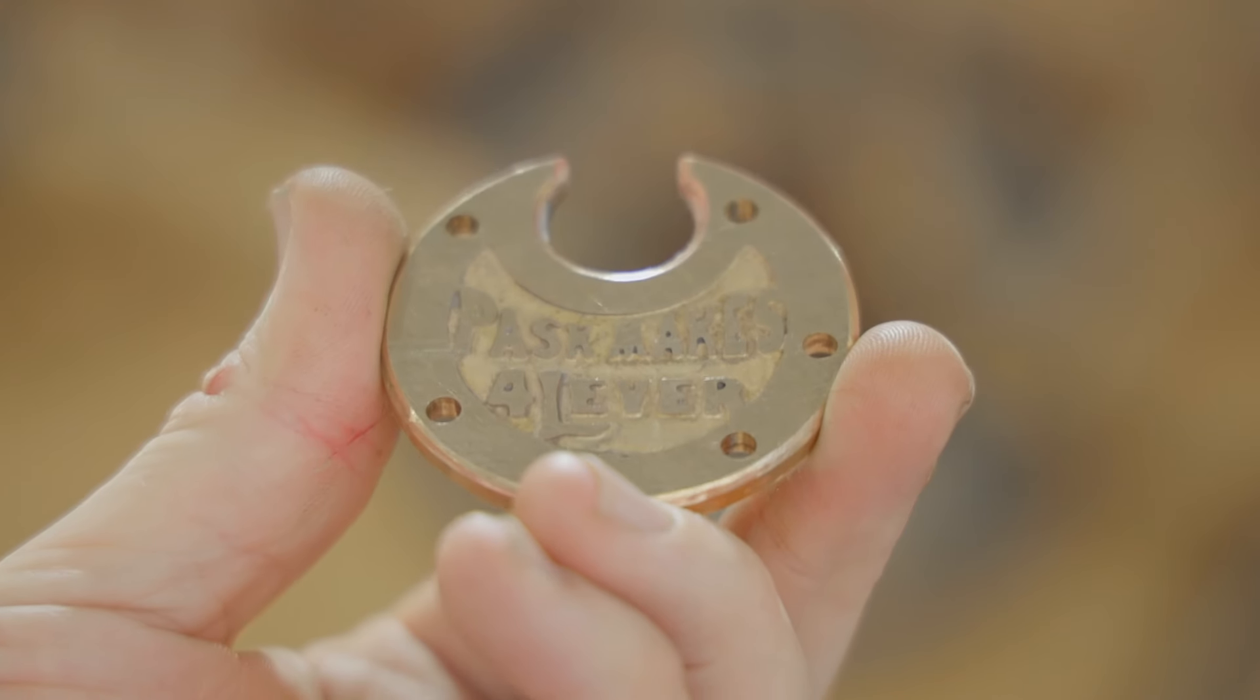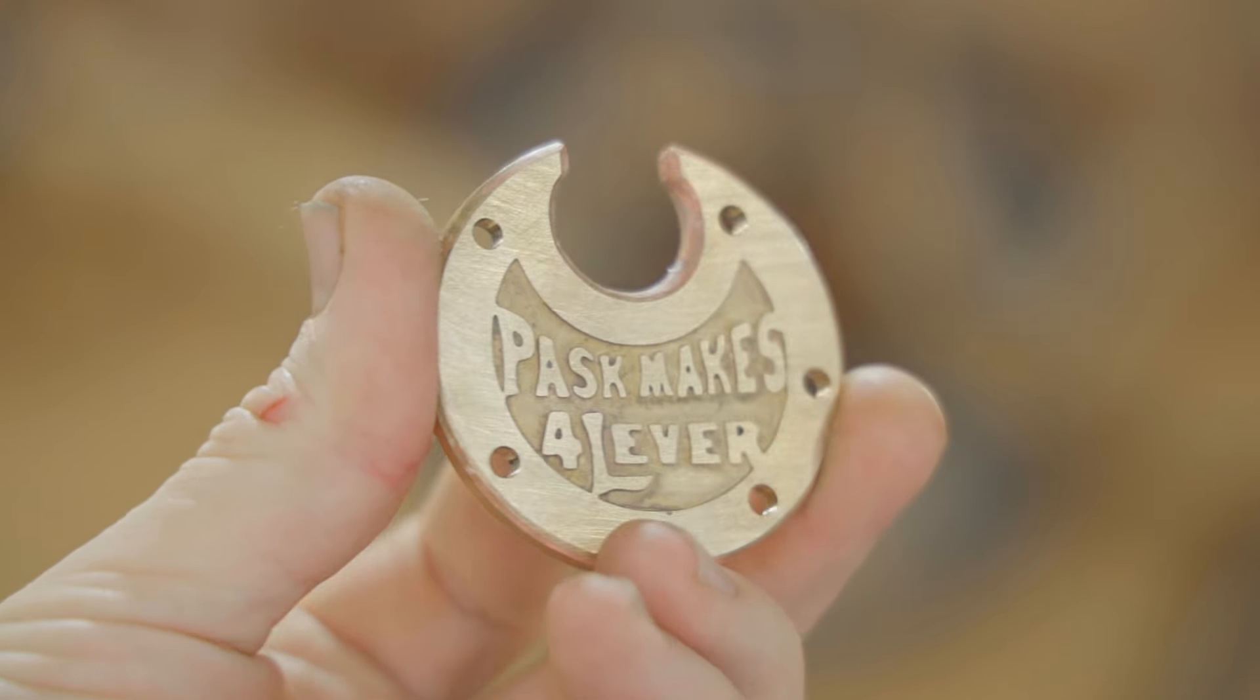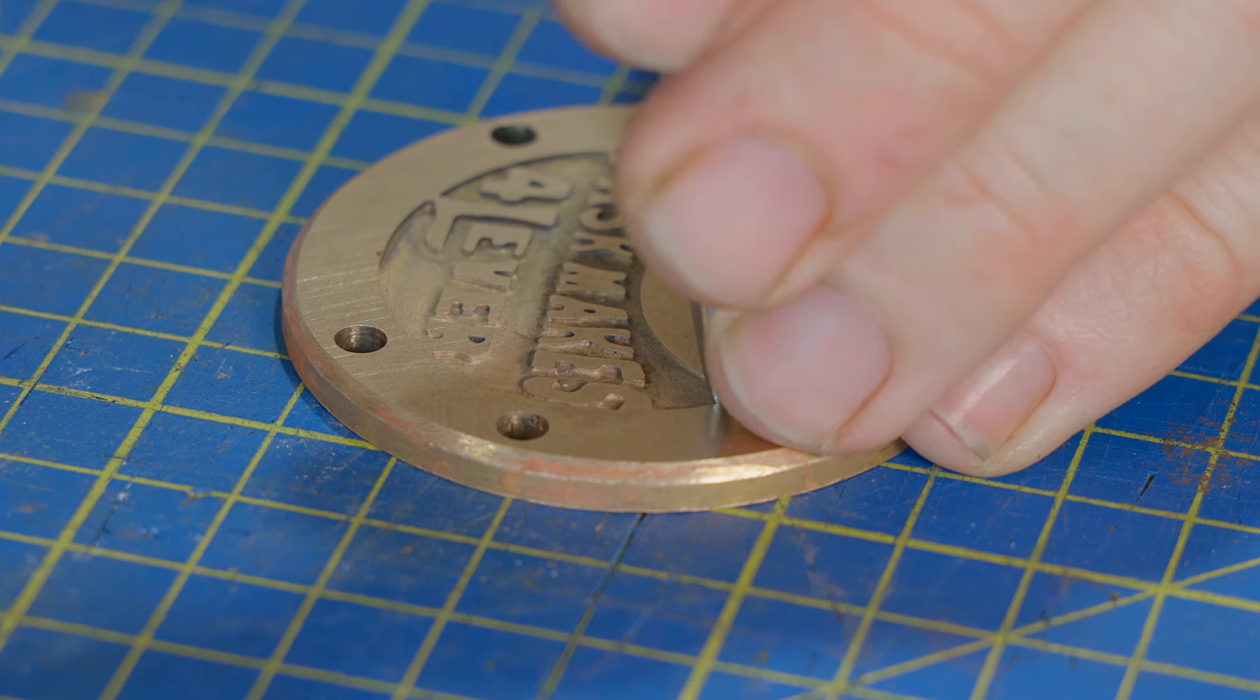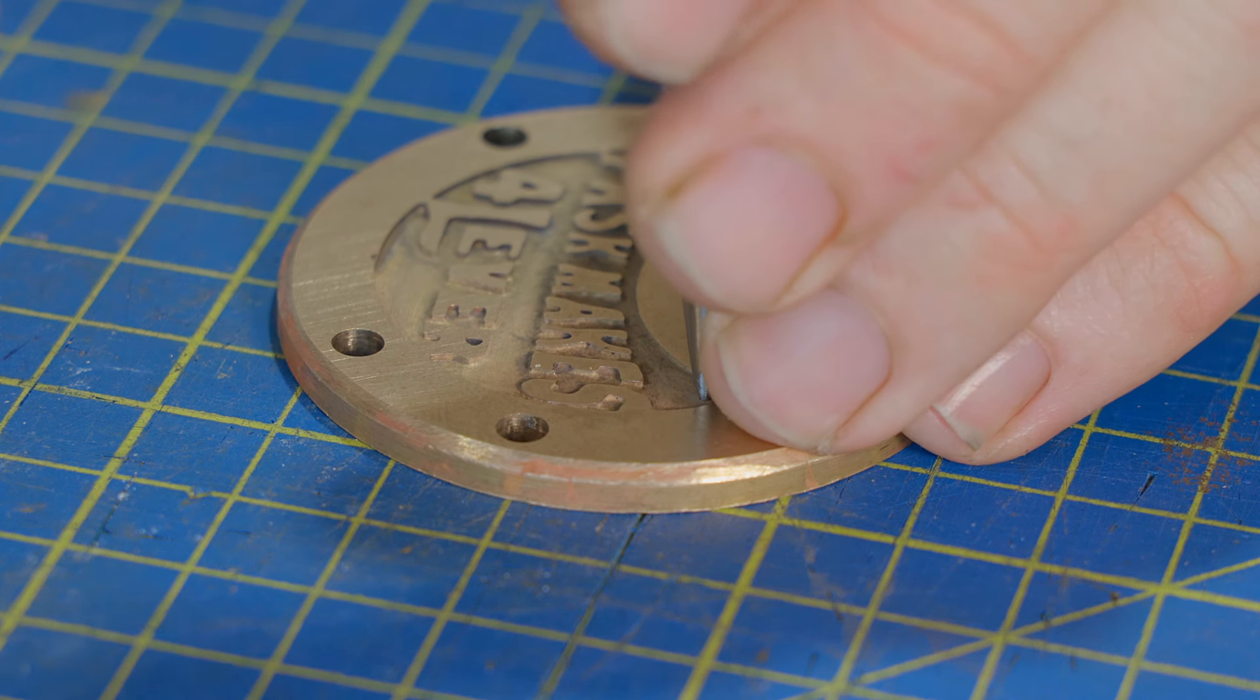Just like on the vintage pancake locks I'll stipple the background of the artwork. I've ground the end of this cheap nail punch and that should do the job. Hopefully this works out and I don't stick it up.